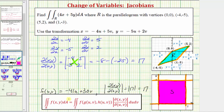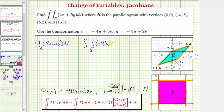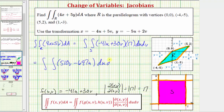Now we have all the pieces to set up the transformed double integral. The double integral over R of (4x plus 5y) dA equals the double integral over S of (negative 41u plus 30v) times seventeen du dv. Distributing the seventeen gives 510v minus 697u. Because the region S is the unit square, both u and v integrate from zero to one.